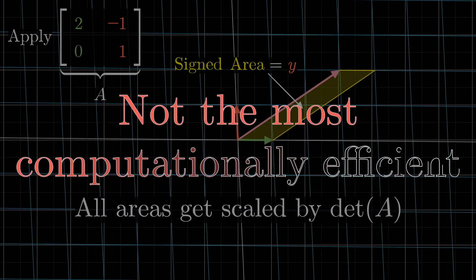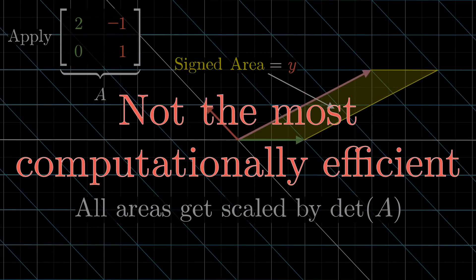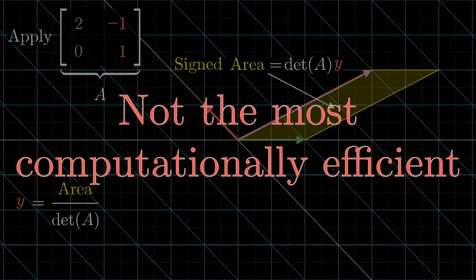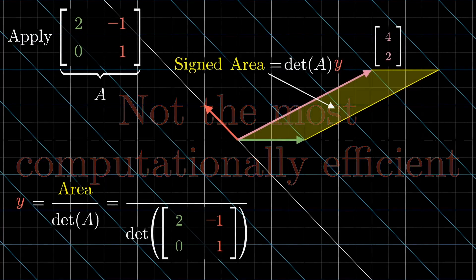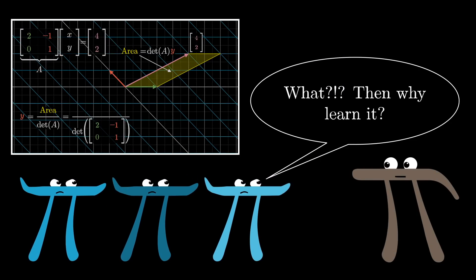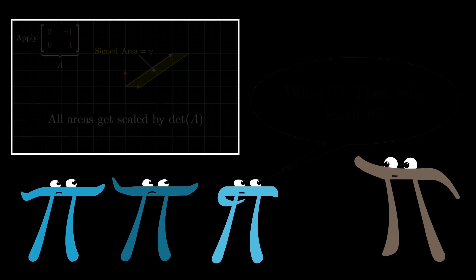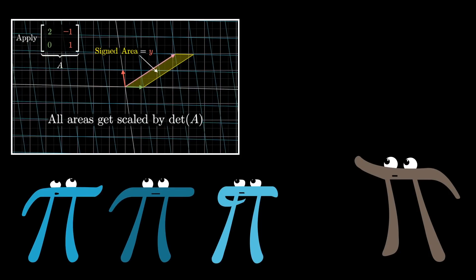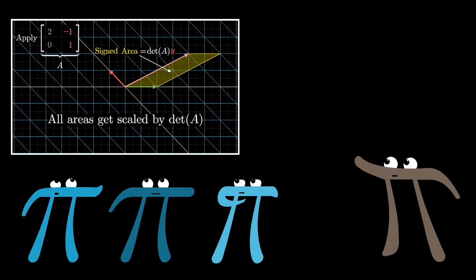But first, I should say up front that this Cramer's rule is not actually the best way for computing solutions to linear systems of equations. Gaussian elimination, for example, will always be faster. So why learn it? Well, think of it as a sort of cultural excursion.